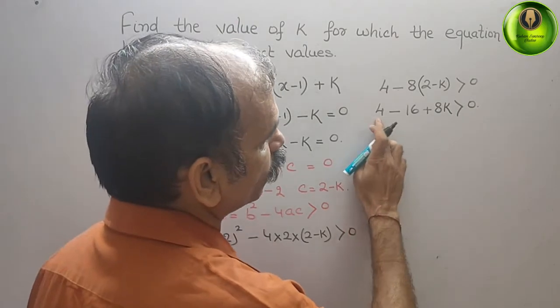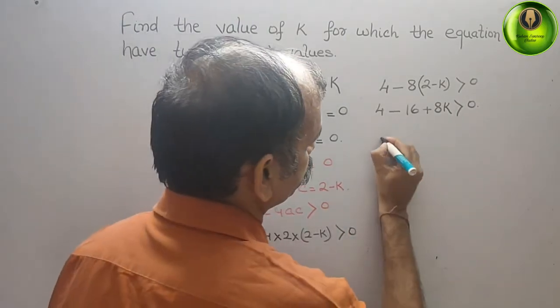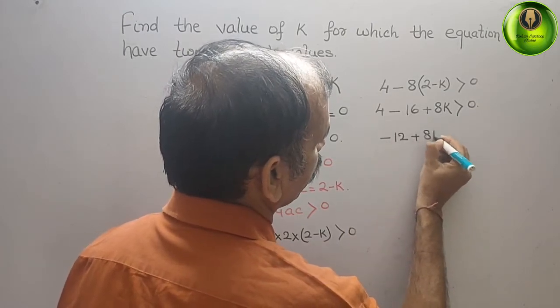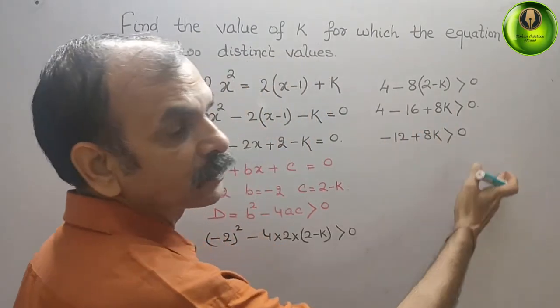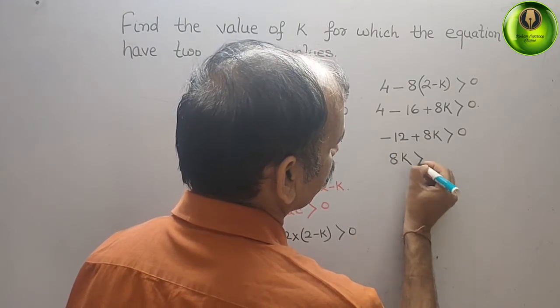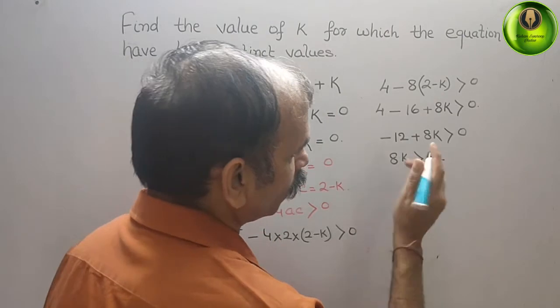Now solve this: 4 - 16 is -12 plus 8k, it should be greater than 0. Bring this -12 to your right side: 8k is greater than 12.